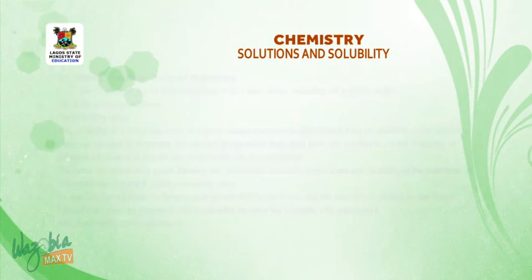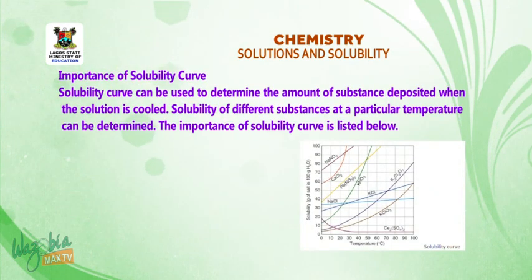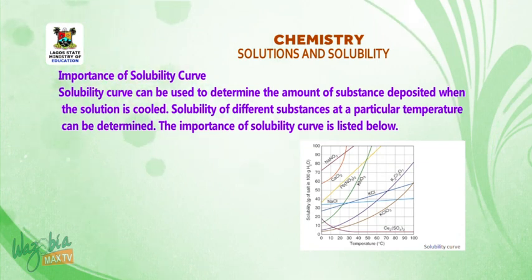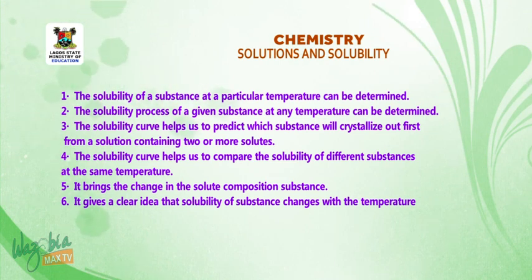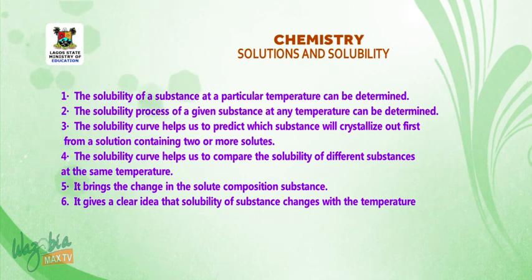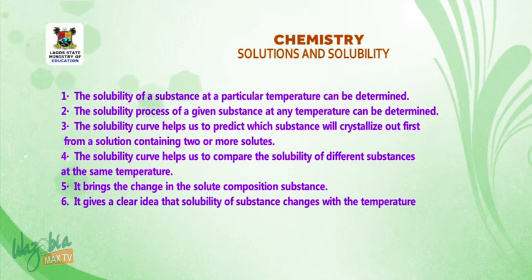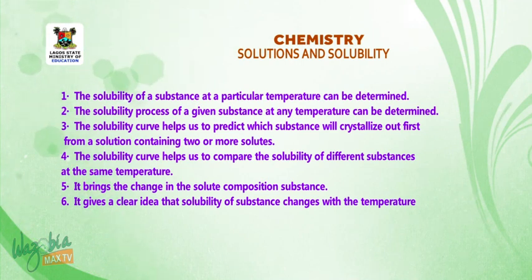Temperature plays an important role in solubility because the solubility of a substance differs at different temperatures. Importance of the solubility curve: one, the solubility of a substance at a particular temperature can be determined; two, the solubility of a given substance at any temperature can be determined; three, it helps predict which substance will crystallize out first from a solution containing two or more solutes; four, it helps compare the solubility of different substances at the same temperature; five, it shows the change in solute composition with temperature; six, it gives a clear idea that solubility changes with temperature.